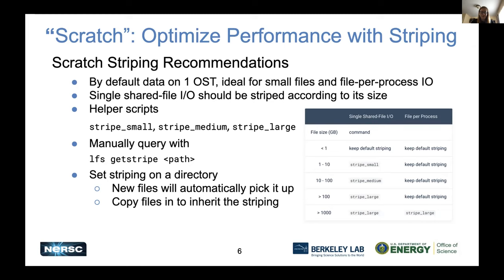We have helper scripts that will automatically do the striping for you — small, medium, and large — available in your path when you log into Perlmutter or Cori. We have a table to guide you about when and how to set striping. For single shared file IO, you'll want to leverage striping because you want to talk to multiple OSTs, and as the file size increases you want more OSTs involved. For file-per-process IO, files will automatically get distributed across OSTs in a round-robin fashion, so you don't really need to do anything until files get really large.